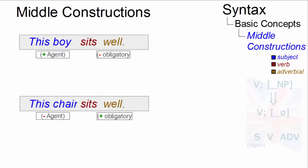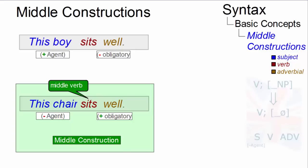In this example, sit is a so-called middle verb, the sentence is a middle construction.